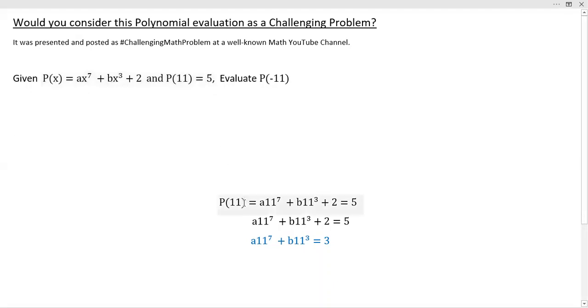Now, P at 11 right here ends up resulting in this term right here. The arithmetic there is fairly straightforward. You just substitute 11 everywhere you see an X, and then when you subtract this two from both sides,